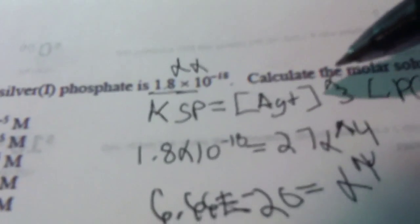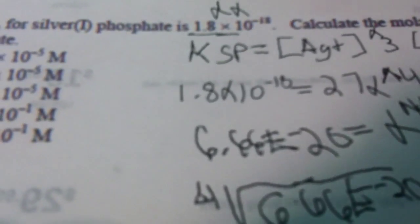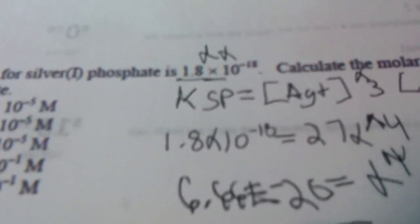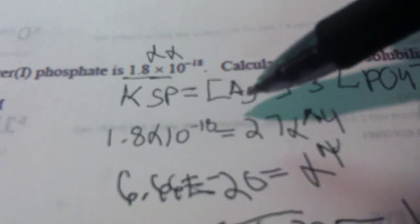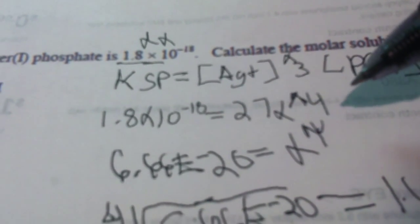So just a quick review. You would do the x times x. You would distribute because they're asking for the silver. So you want to just get the silver, so that would be [Ag⁺]³. That's what makes it work, and then distribute 27x⁴.